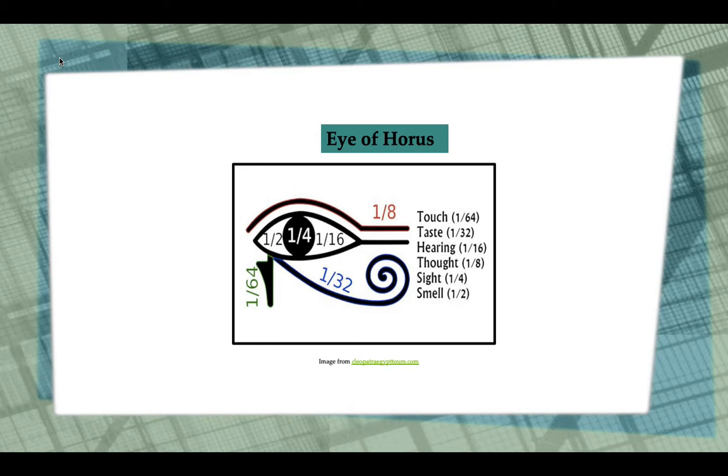The image is the eye of Horus, where you can see that each part of the eye represented a different fraction. Each half of the previous one, in which the total was 1/64th of a whole, was considered as the first known example of a geometric sequence.